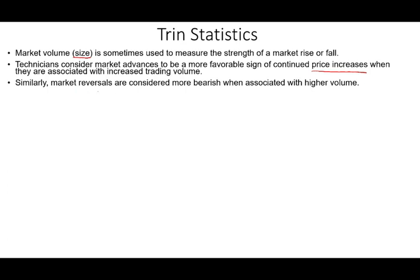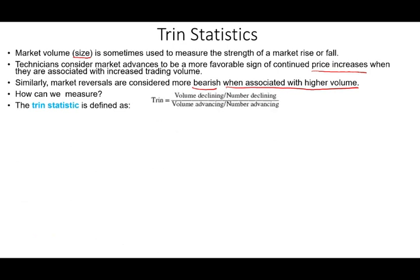Also, market reversals are considered more bearish when associated with higher volume — when there is much more selling than buying and volume is higher. How do we measure this indicator? Trend statistics is essentially two ratios divided by each other: volume of decliners divided by the number of decliners, and volume of advancing issues divided by the number of advancing issues.